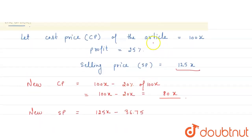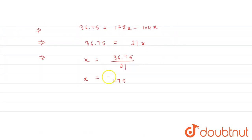Now what is x? The cost price of the article is 100x. So cost price is equal to 100x. What is x? 1.75. So 100 multiplied by 1.75, which is equal to 175.